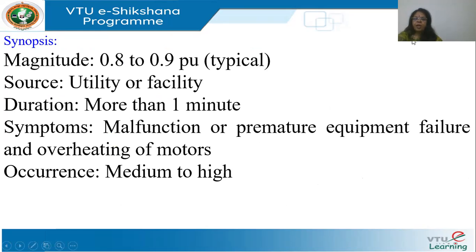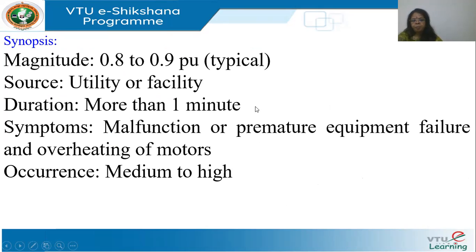Synopsis of under voltage: the magnitude is typically between 0.8 to 0.9 per unit, it lasts for more than one minute, and occurrence is medium to high — it occurs pretty often.